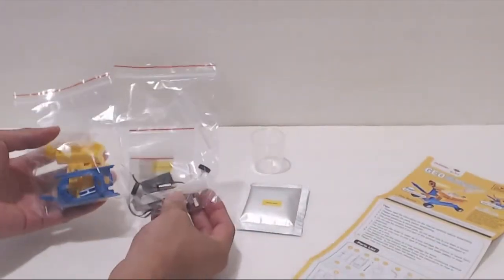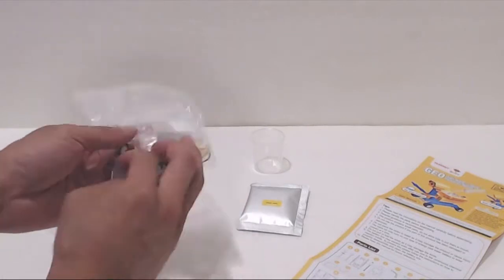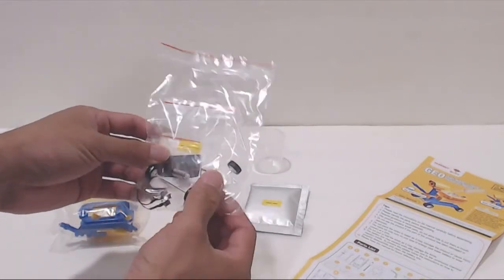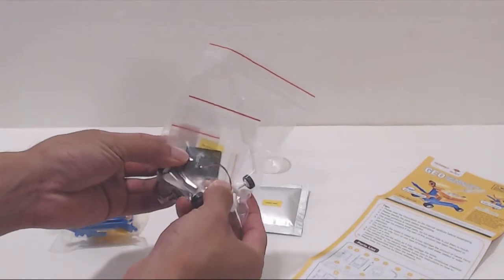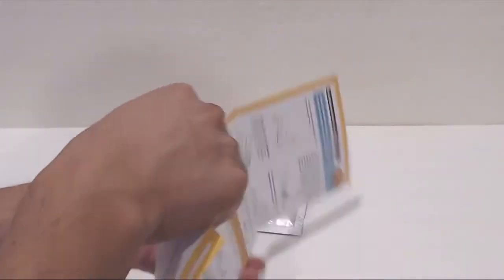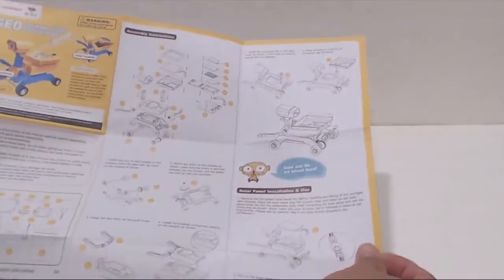First we'll assemble the robot, then we'll attach the salt water battery to run the robot and test it. After, we'll use the solar panel by disconnecting the salt water battery and swapping some components. The instructions are pretty easy to follow, so let's get started.